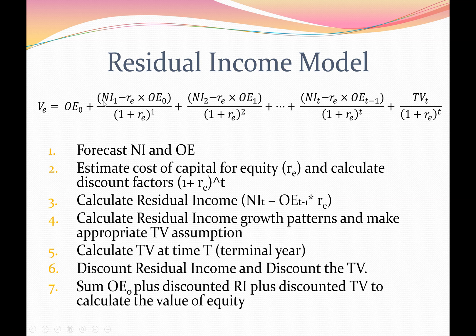Step three is to calculate the residual income. The residual income refers to the numerator component of each term: net income in year one minus the cost of equity capital times owner's equity in year zero. This term is the residual income, also called abnormal earnings. The logic is: imagine a business with equity of $100. Based on the risk of the business, I'd like a return of 7% each year. $100 times 7% means I'd expect earnings of about $7. If at year end I've actually earned $10, I've earned an abnormally high return — residual income of positive three.